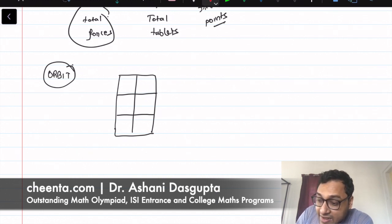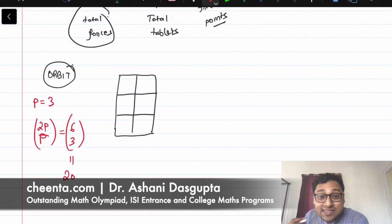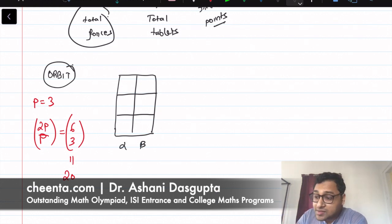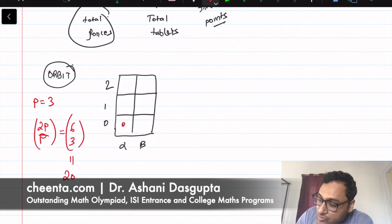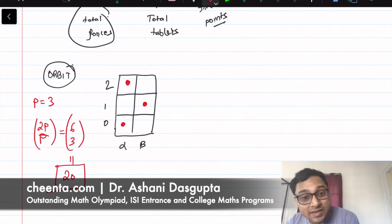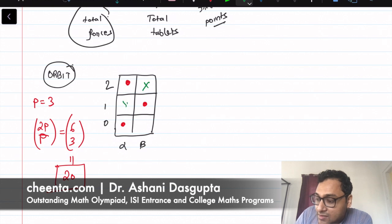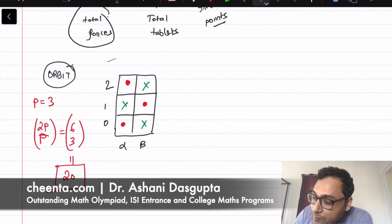We are taking the example of p equal to 3. So 2p choose p is 6 choose 3, which is 20. So there are 20 tablets. 6 choose 3 means we made a tablet with alpha and beta as the 2 columns and 0, 1, 2 as the 3 rows. Out of these 6 boxes, we choose 3 of them — so maybe we choose these 3. This is one of these 20 tablets. We put a cross in the remaining boxes. Let's call this tablet 1.